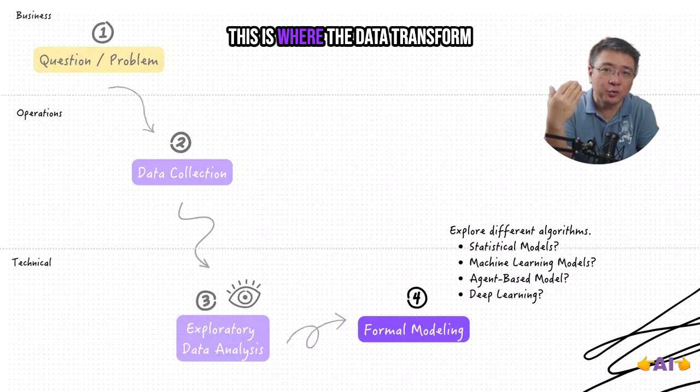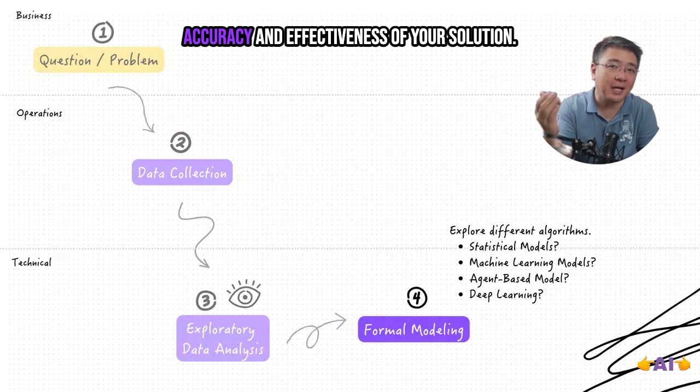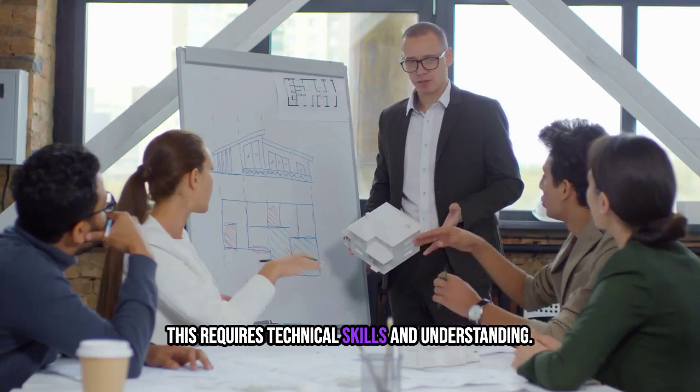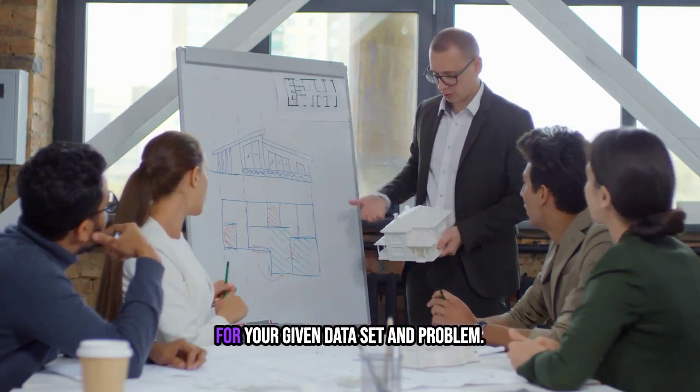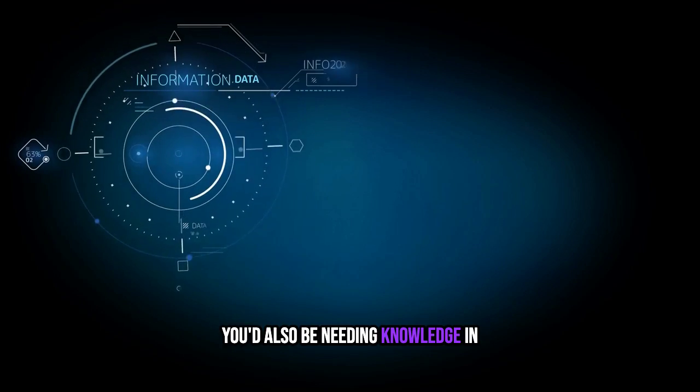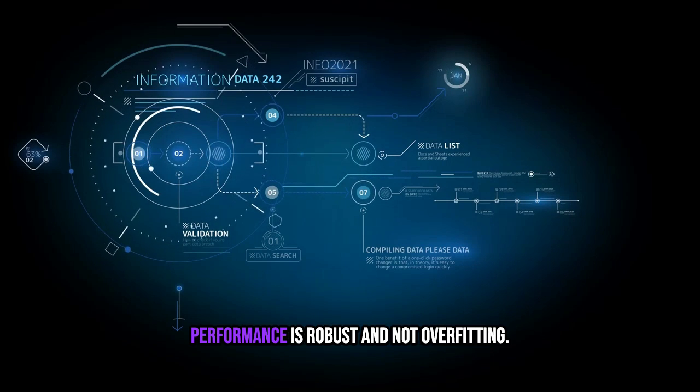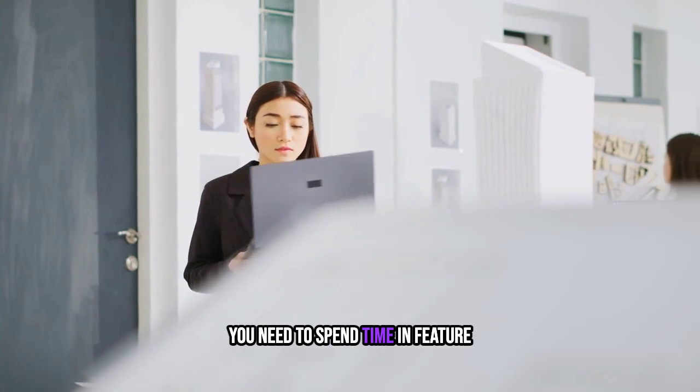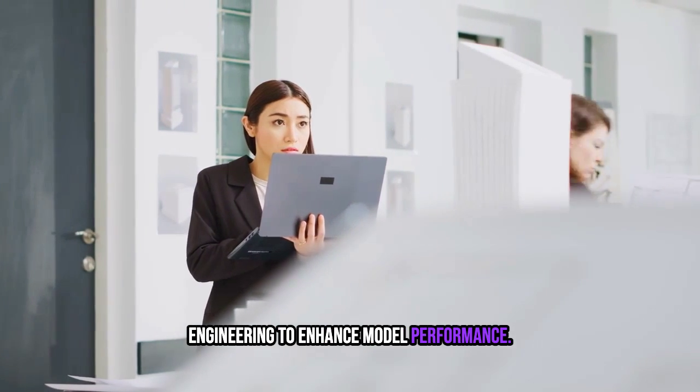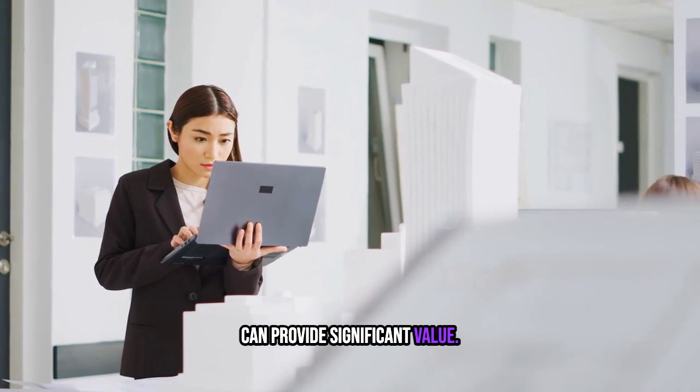Step 4 is formal modeling. This is where the data transforms into actionable insights. Choosing the right model impacts the accuracy and effectiveness of your solution. This requires technical skills and understanding the different algorithms and finding the best algorithm that will work for your given data set and problem. You'll also be needing knowledge in performing validation techniques like K-fold validation to ensure that your model performance is robust and not overfitting. You'll need to spend time in feature engineering to enhance model performance and possibly creating new features from existing data that can provide significant value.